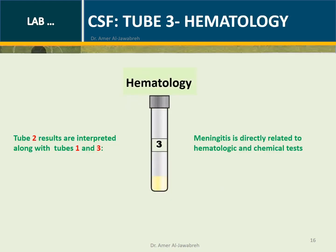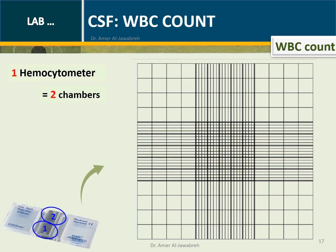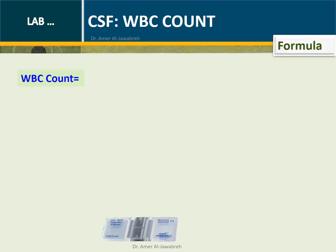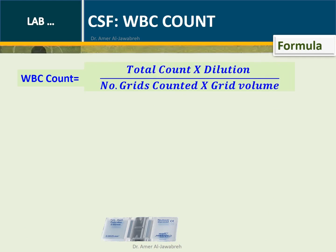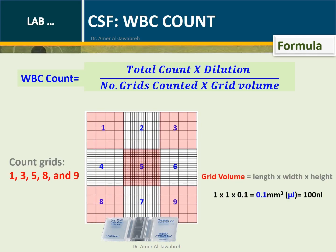CSF Tube 3 — Hematology: The results of all three tubes are interpreted together. CSF WBC count uses a hemocytometer containing two chambers; one chamber contains nine grids, and the depth of a chamber is 0.1 mm. Formula: WBC count = (Total count × Dilution) / (Number of grids counted × Grid volume). Count grids 1, 3, 5, 8, and 9. Grid volume = Length × Width × Height = 1 mm × 1 mm × 0.1 mm = 0.1 µL.